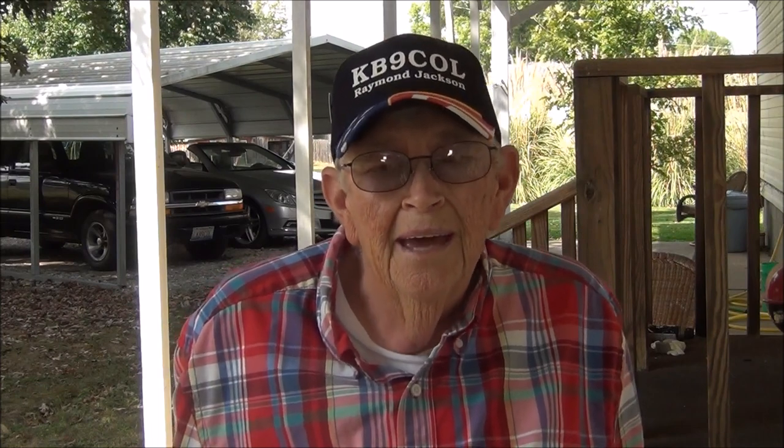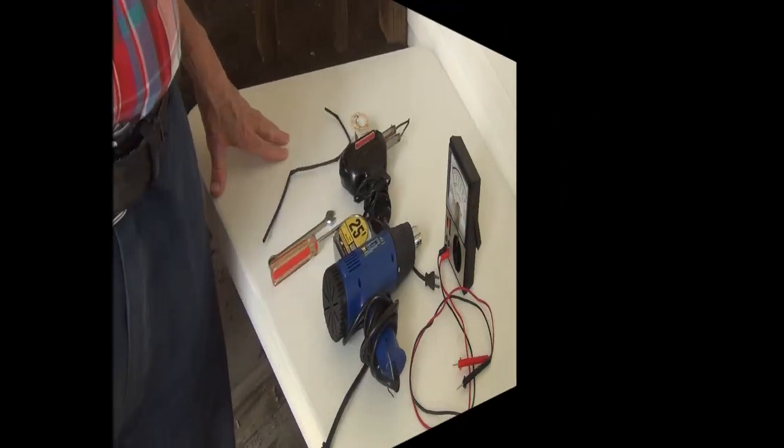Hi, I'm Raymond, KB9COL. This afternoon I'm going to be putting a 6-meter antenna together and showing you how to do it. This 6-meter antenna that I built not only does 6-meter FM and single sideband, but it also, where the plus comes in, it also does 2-meter sideband. I will give you step-by-step on how to put the antenna together. I hope everyone has fun putting it together, I sure did.